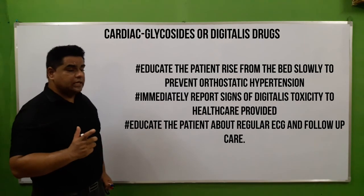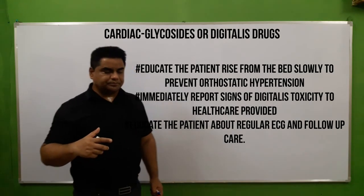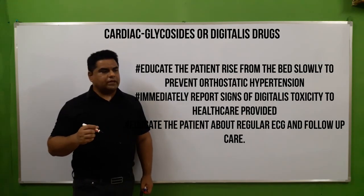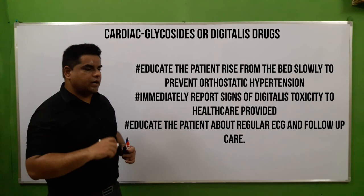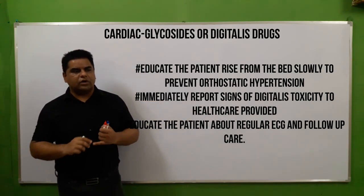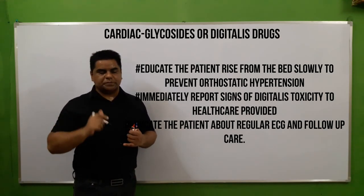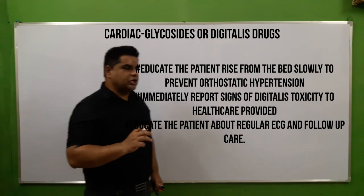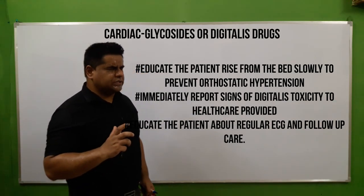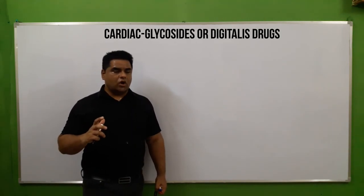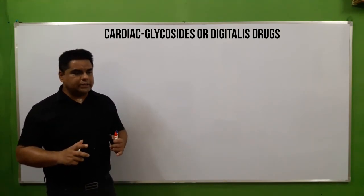Regularly and frequently check blood potassium levels — hypokalemia and hypomagnesemia should be avoided. Conduct frequent ECG, liver function tests (LFT), and renal function tests (RFT). Educate the patient to take medicine exactly as prescribed. Advise rising from bed slowly to prevent orthostatic hypotension, especially in elderly patients at risk of falls and deep vein thrombosis. Always keep the doctor's contact number and ambulance number ready to report any symptoms of drug toxicity immediately.